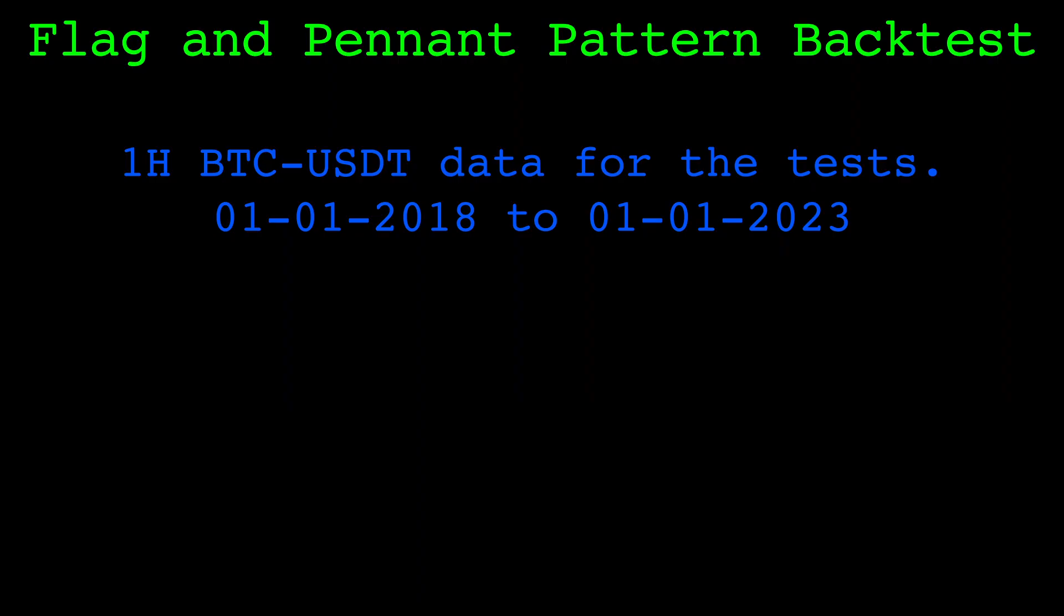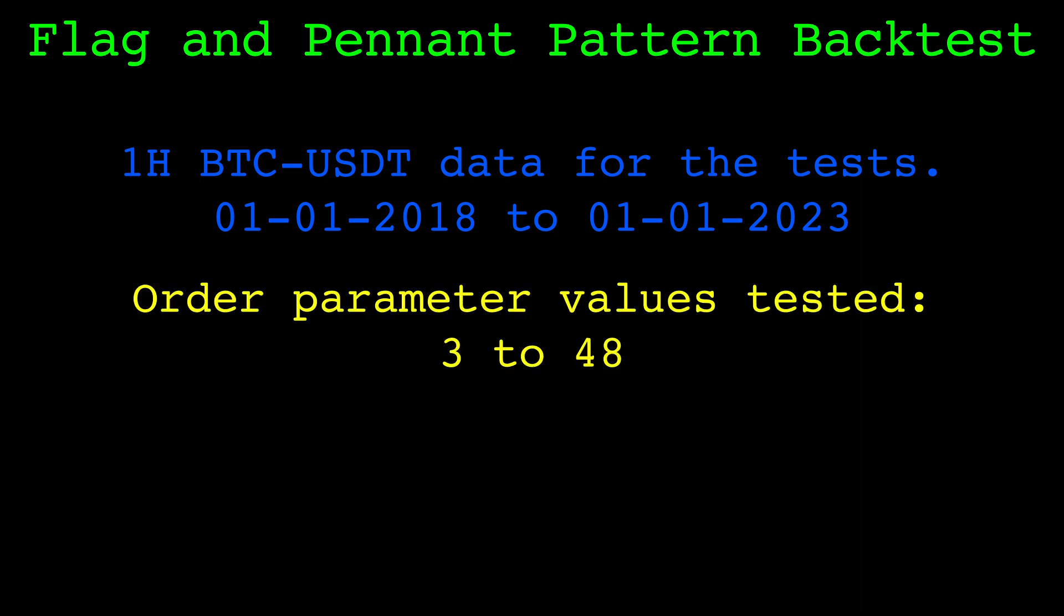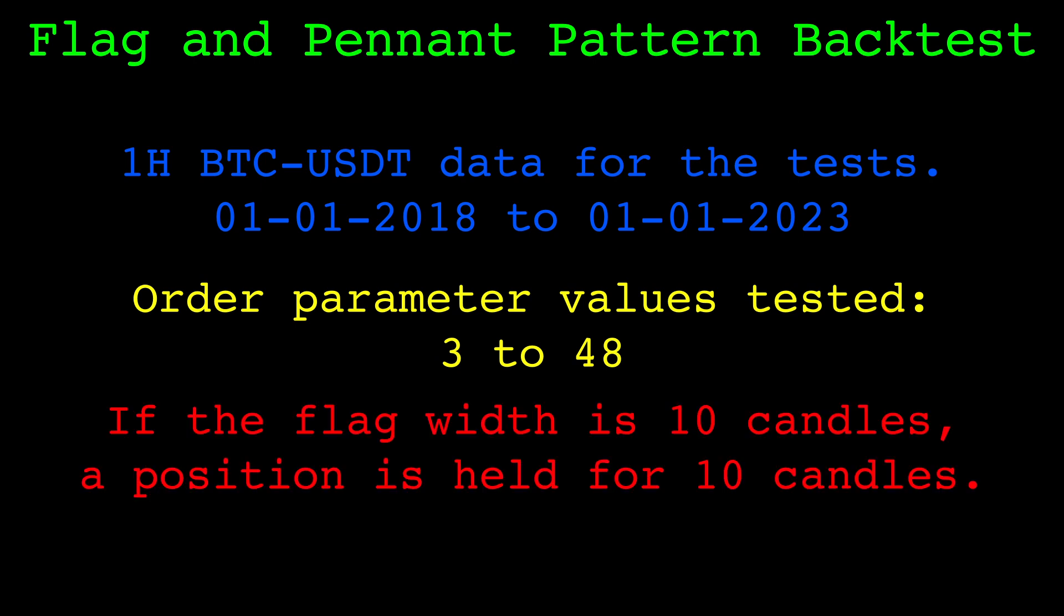Now that we've gone over the code, let's see how these patterns perform. We'll look at hourly data for Bitcoin Tether from 2018 through the end of 2022. To backtest, we'll find all the patterns in the data across a wide range of the order parameter. Then see how the price changes over the next flag width. Meaning, if we find a pattern with a flag width of 10 candles, we will simulate holding a position for 10 candles after the pattern is found. I think this is a natural rule as a larger flag would warrant a longer held position. I did not include any stops or take profit rules. That isn't to say they wouldn't help, but I just want to get a baseline idea of how the market behaves after the patterns are found.